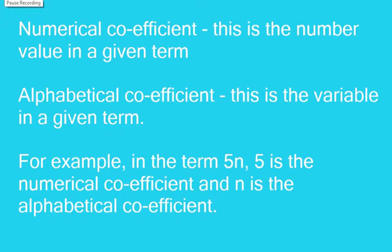Now a numerical coefficient - this is the number value in a given term. And an alphabetical coefficient - this is the variable in a given term. For example, in the term 5n, 5 is the numerical coefficient and n is the alphabetical coefficient.